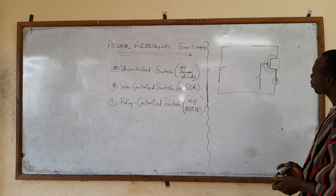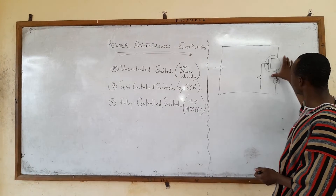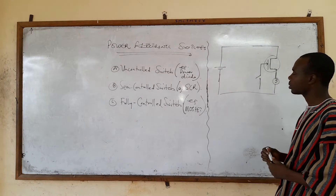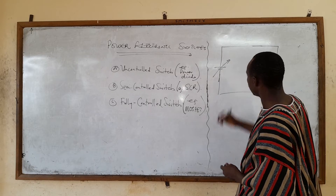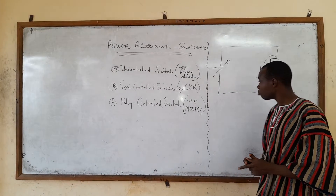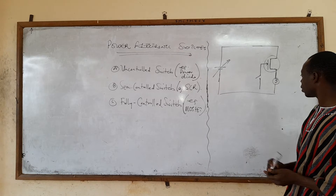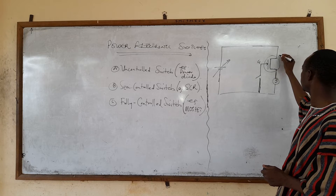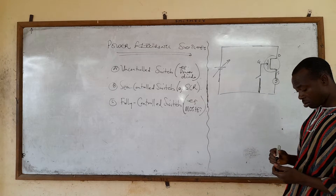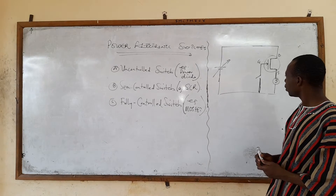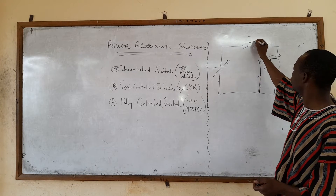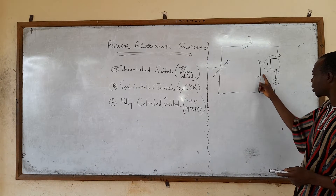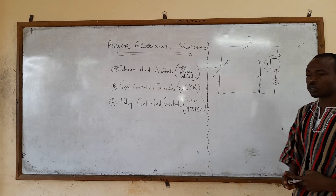We have a MOSFET connected in series with a lamp. We have a voltage source, and we have a way of turning it on through the gate. We have the gate, the drain, and the source. Now we can allow a drain current to flow, but since we don't have any signal at the gate, this switch will remain off.